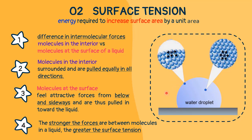To increase the surface area, water molecules must move to the surface by breaking some attractions in the interior, which requires energy — in other words, a tension — and causes the surface to tighten like an elastic film. So the stronger the forces are between molecules in a liquid, the greater the surface tension.